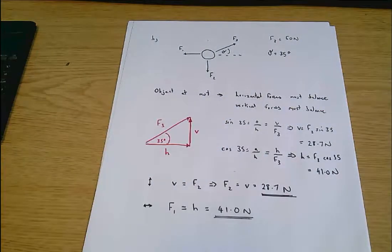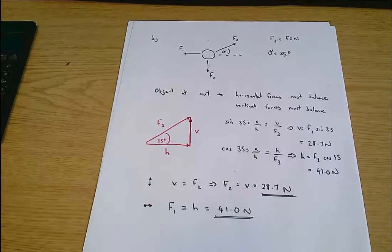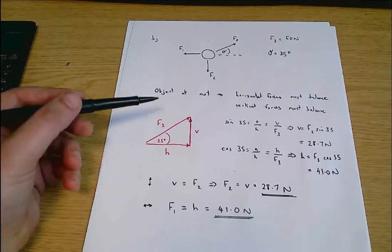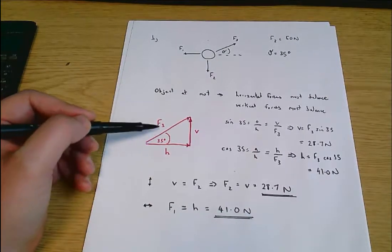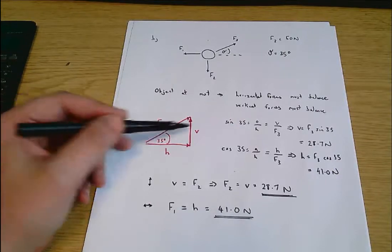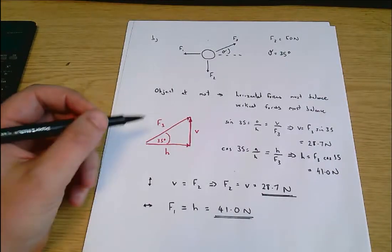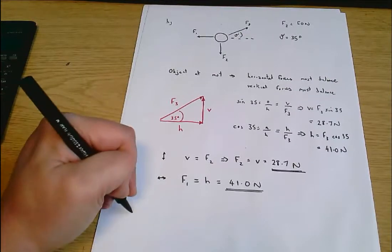So the key principle there is equilibrium. It's often easiest to think of equilibrium in horizontal and vertical terms when we're dealing in two dimensions. So anything that's not horizontal or vertical, break it up into its horizontal and vertical components and then solve.